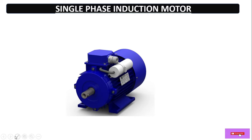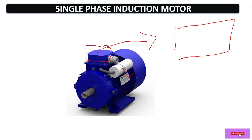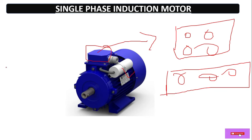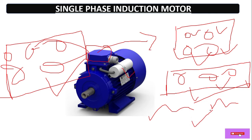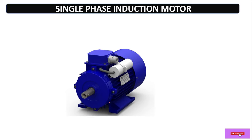This is a single phase induction motor. Here we have a terminal box and this is the starting capacitor. If you open this box you'll find four terminals, sometimes three and even six, but we always have a confusion regarding which one is the starting winding, which one is the running winding, and which one is the common terminal. In this video we'll identify the windings and terminals of this motor.